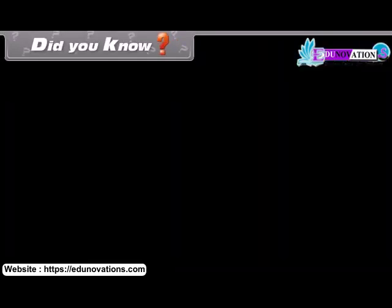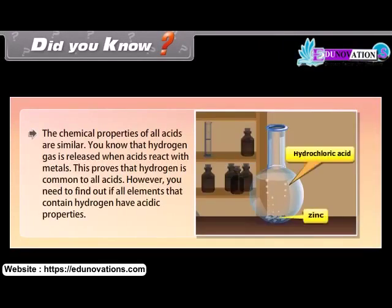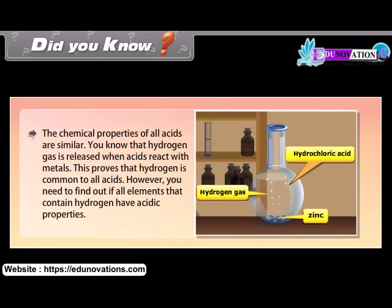Did you know? The chemical properties of all acids are similar. Hydrogen gas is released when acids react with metals, which proves that hydrogen is common to all acids. However, you need to find out if all elements that contain hydrogen have acidic properties.